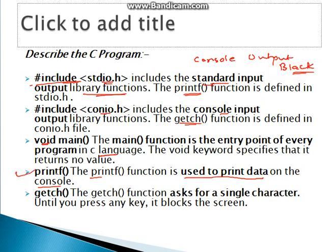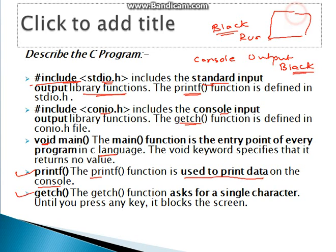printf is the function for output. getch asks for a single character — it blocks the screen when the black output screen is shown. When you run the program and the complete output is shown, pressing any key closes the black screen. That function is written in getch — so until you press any key it blocks the screen. This is how we work with C language.